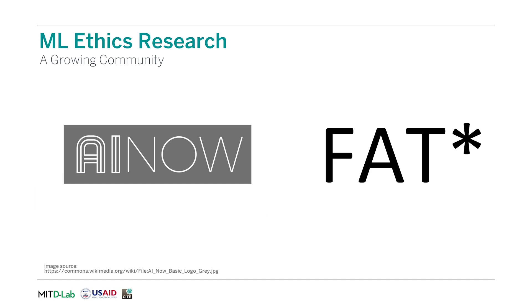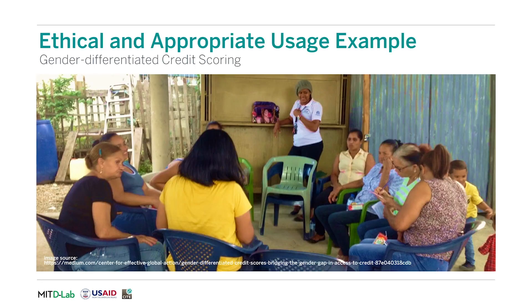There is a large community of research in this area in developed countries, such as the FAT or AI Now groups. A well-known example is about gender-differentiated credit scoring. Low-income women in developing countries often lack credit histories and formal income. Despite evidence showing that these women default on loans less than men, the lack of data makes it difficult for lending organizations to provide these women loans. As a result, taking predatory loans from informal lenders is a common practice.